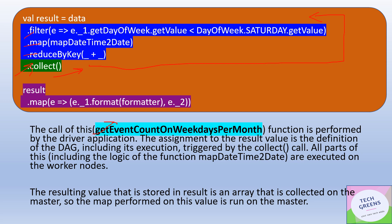Now we have called the action `collect`. As soon as you call `collect`, this result data would be computed based on the DAG lineage — these transformations would be applied in sequence and data would be collected as an array into the result variable. As soon as `collect` is called, all this data goes back to the driver. You have to remember: as soon as an action like `collect` is called, everything is shuffled back to the driver.